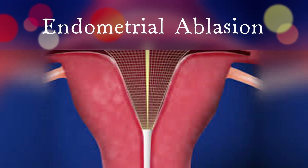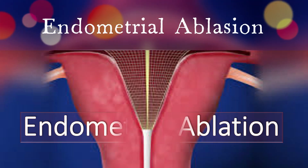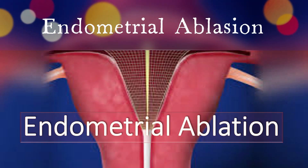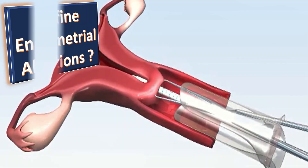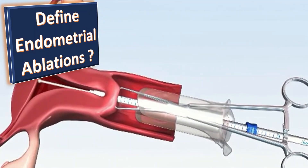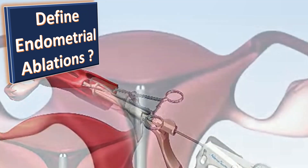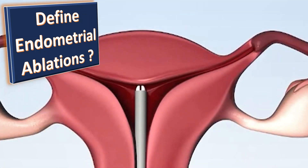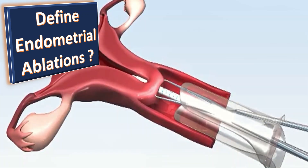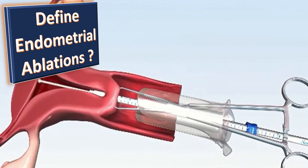The topic of our discussion today is endometrial ablations. Endometrial ablations refer to all the techniques which permanently destroy the functional layer of endometrium and up to 5 mm of myometrium in order to reduce the heavy menstrual bleeding.